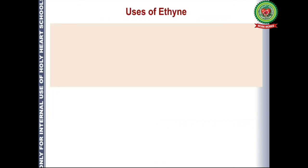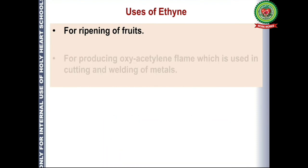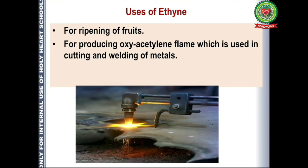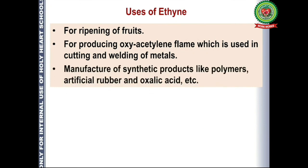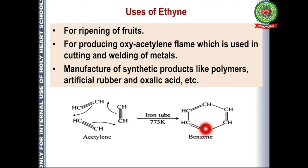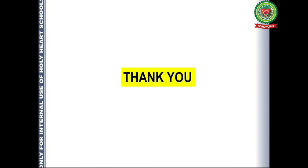The uses of ethyne are: first, it is used for the ripening of fruits. Second, it is used to produce the oxyacetylene flame, which is used in cutting and welding of metals, as it produces a very high temperature. Third, it is used in the manufacture of synthetic products like polymers, artificial rubber, and oxalic acid. Importantly, three molecules of ethyne react together in the presence of an iron tube to form benzene, which is an important aromatic compound. That was all for today — thank you so much.